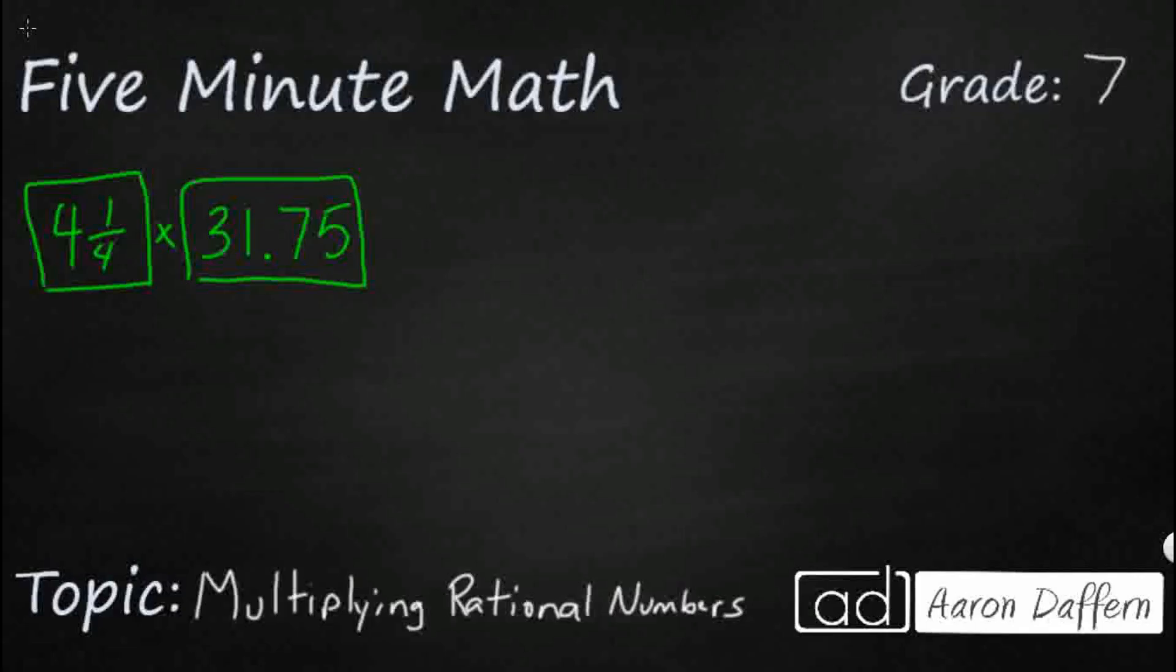If we want to change these both into decimals, we already have 31 and 75 hundredths as a decimal. One-fourth we know is one of our benchmark fractions, and so we know one-fourth is going to be 0.25. So really what we're looking at here is 4.25, and now we simply multiply.